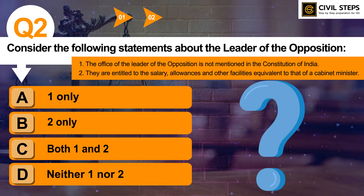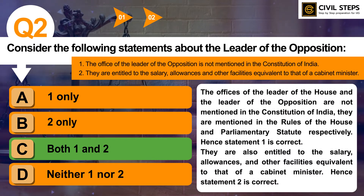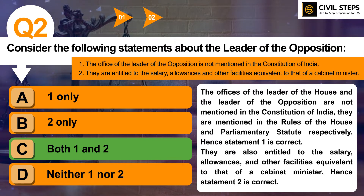You can write your answer in the comment section. The correct answer of this question is Option C, both 1 and 2. The offices of the Leader of the House and the Leader of the Opposition are not mentioned in the Constitution of India; they are mentioned in the Rules of House and Parliamentary Statute respectively. Hence, Statement 1 is correct. About Statement 2, they are also entitled to the salary, allowances, and other facilities equivalent to that of a Cabinet Minister. Hence, Statement 2 is correct.